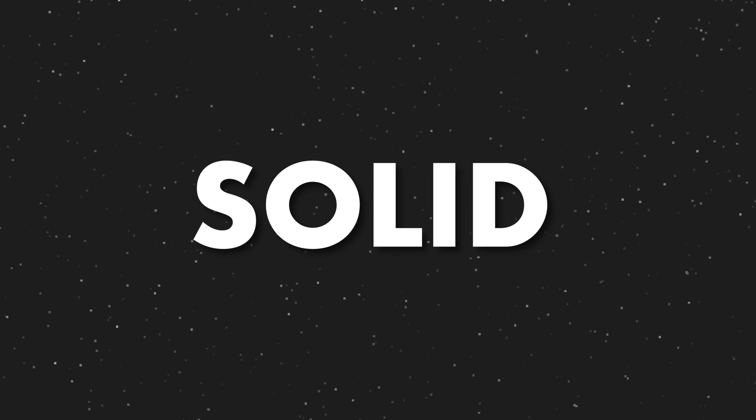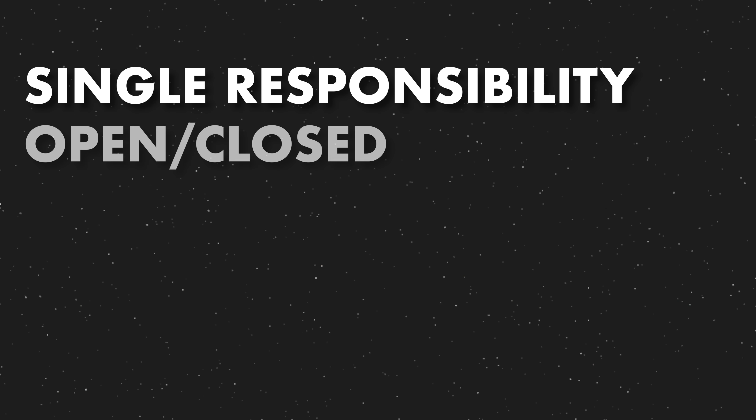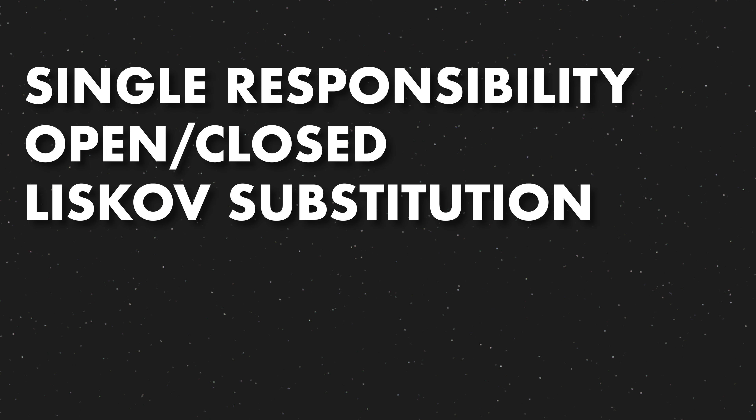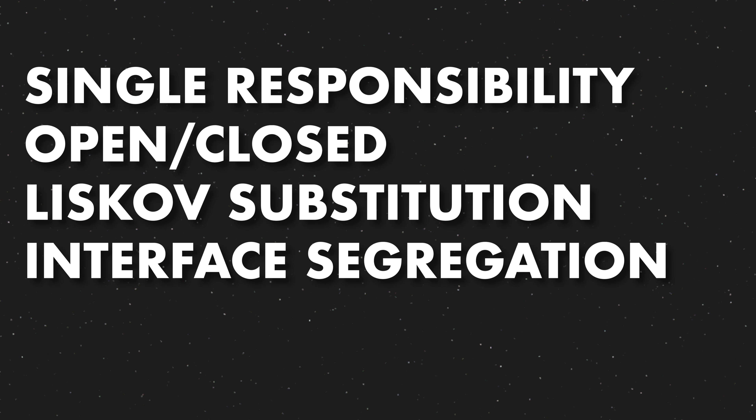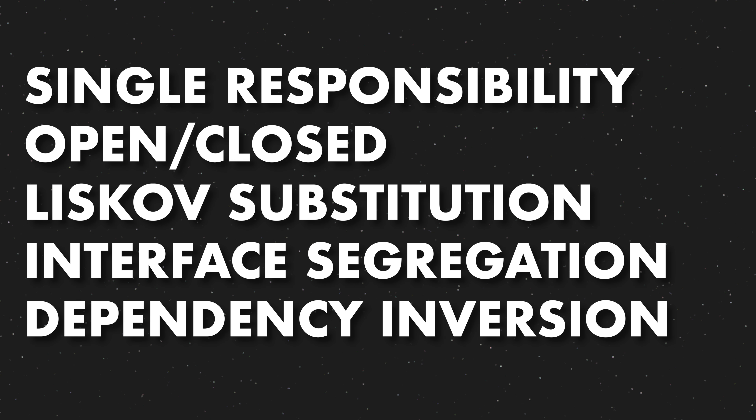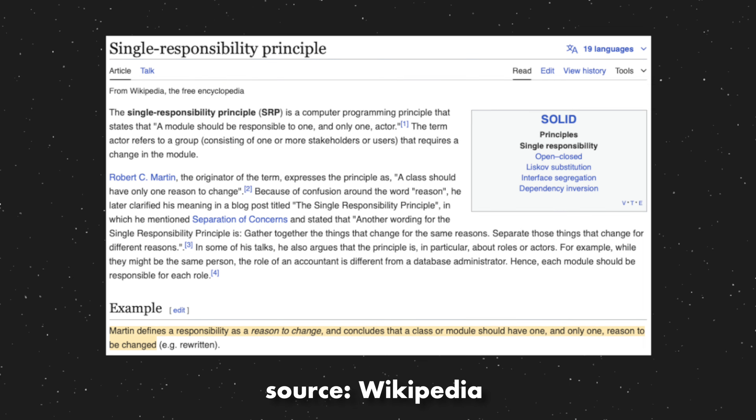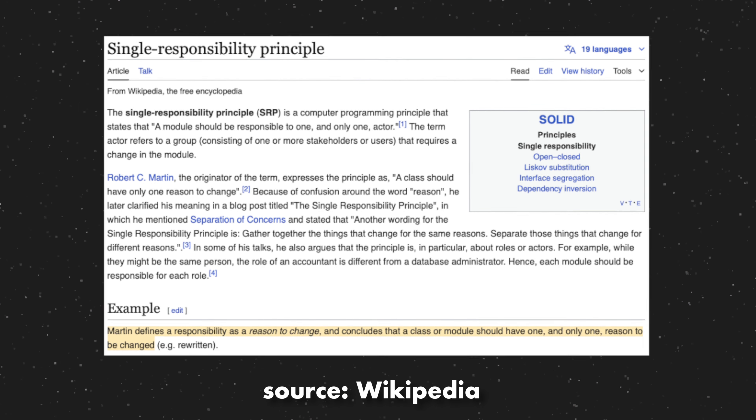SOLID stands for five separate things that, when used in tandem, are considered best practices for developing software: Single Responsibility, Open-Closed, Liskov Substitution, Interface Segregation, and Dependency Inversion. Single Responsibility means that a piece of code should only have one reason to change — meaning it should only really be doing one thing. It should have a single responsibility. You generally hear about this at the class level, though it's also used at the method level; conceptually it's the same general idea.